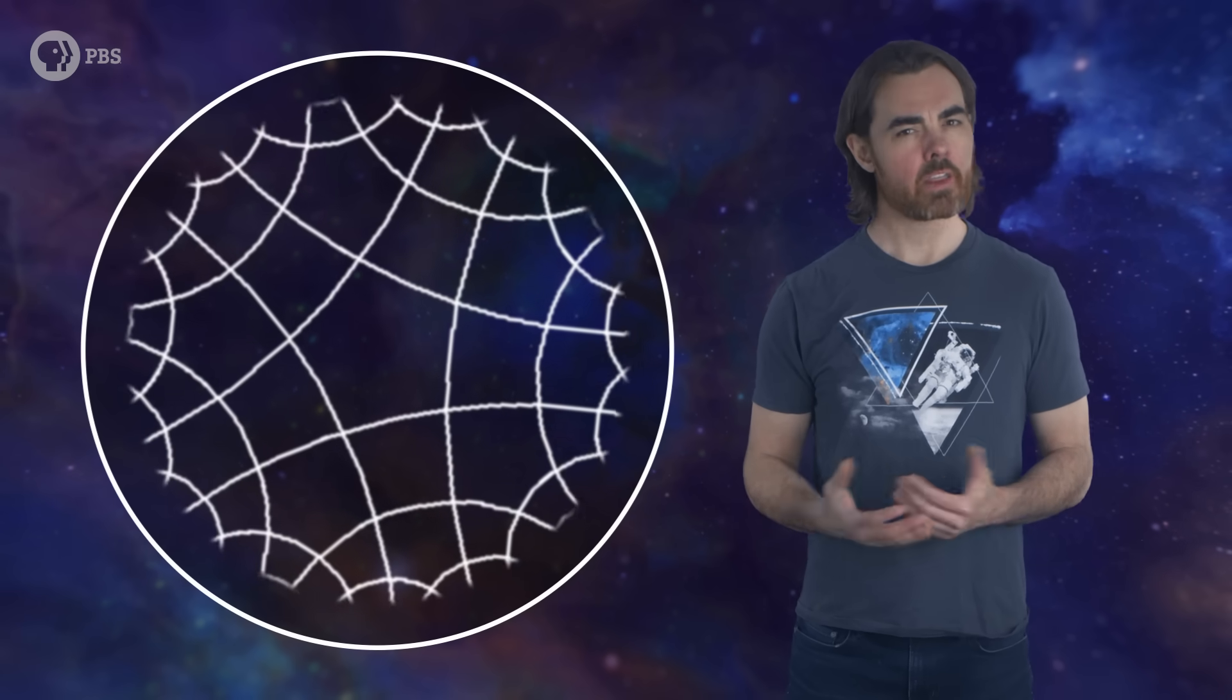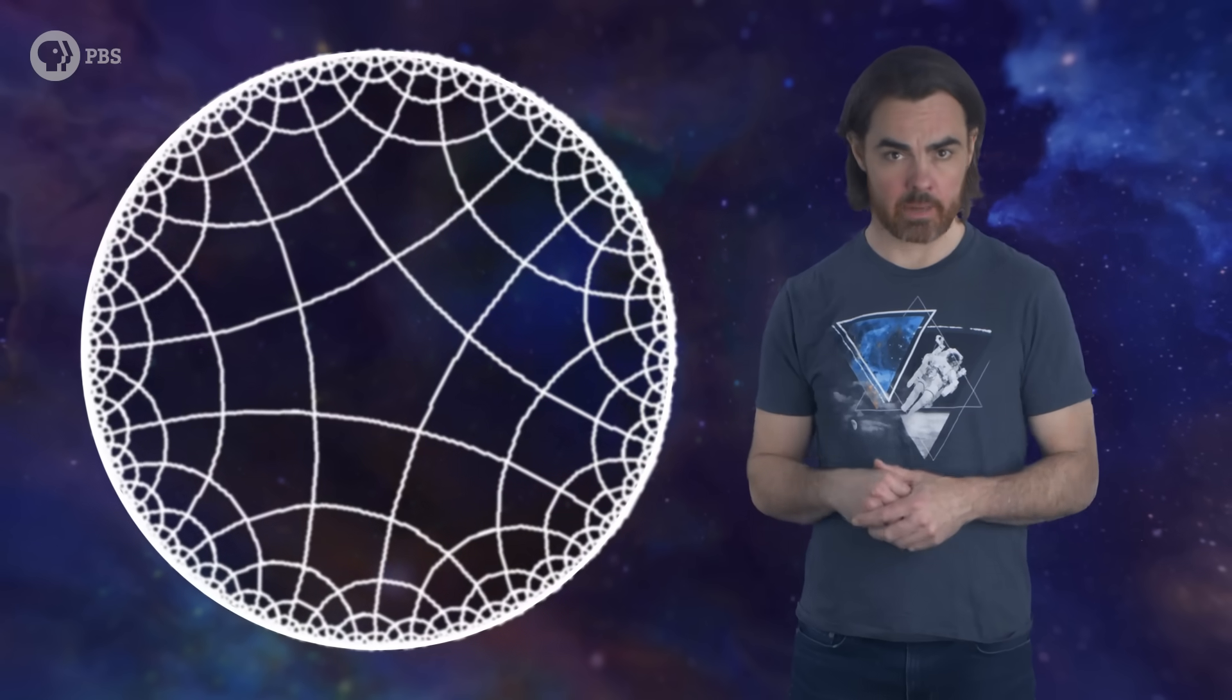The other feature of a conformal mapping is that shapes are preserved, at least locally. We see that when we fill the circle with a regular choice of circle segments. They define a set of enclosed shapes that vary in size but not in shape.